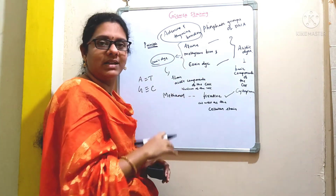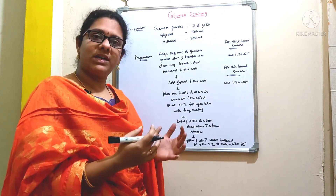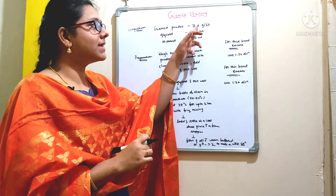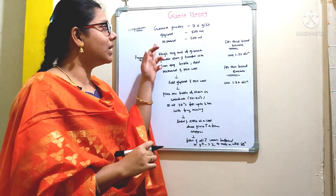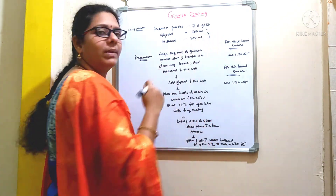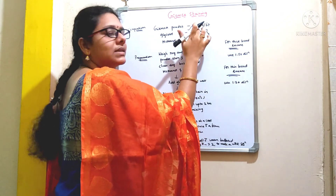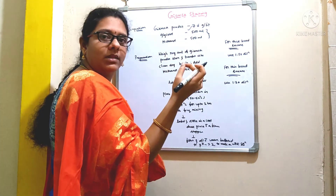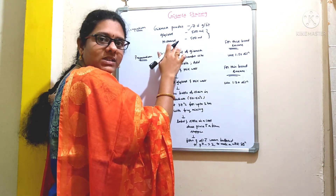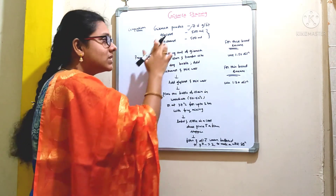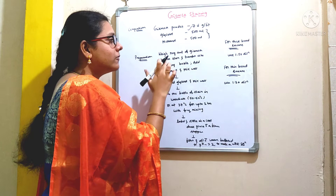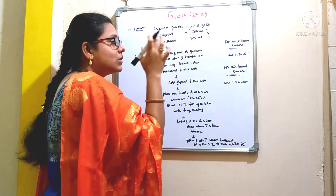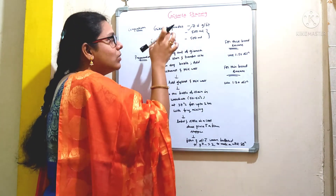Now let us see how to prepare this dye. You can either buy it commercially or prepare it in the laboratory. It is composed of Giemsa powder — 7.6 grams per liter — glycerol 500 ml, and methanol 500 ml. Together that makes 1000 ml. So for 1 liter you add 7.6 grams of Giemsa powder. This powder is composed of azure, eosin, and methylene blue, and methanol acts as a fixative.